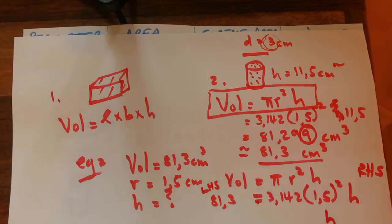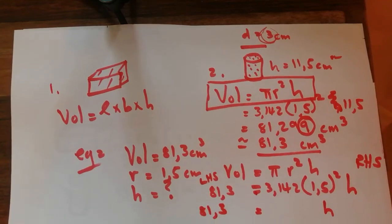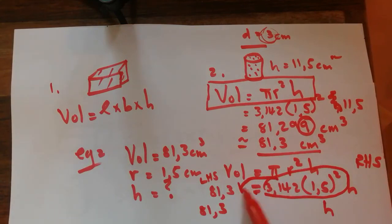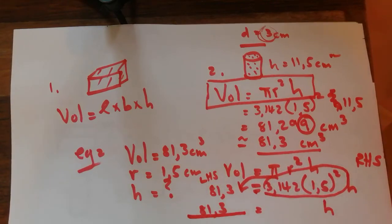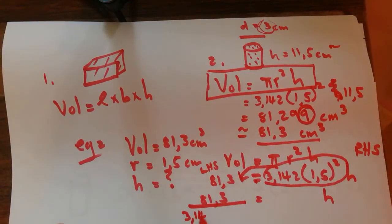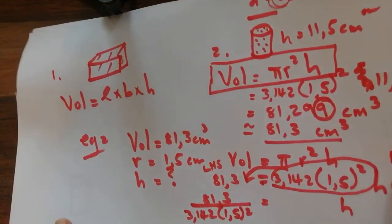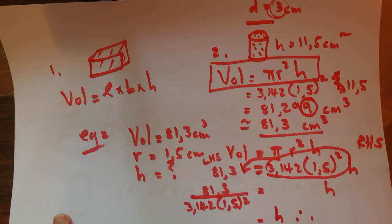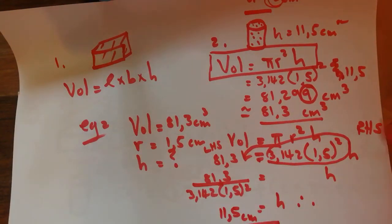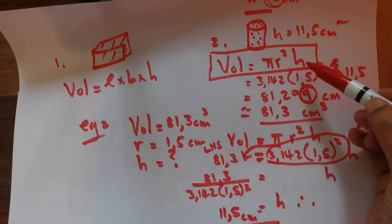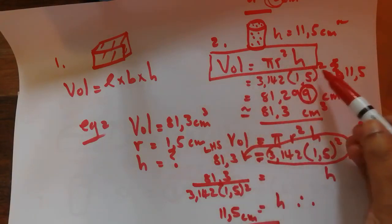So: h = 81.3 ÷ (3.142 × 1.5²). This goes into the calculator and gives h = 11.5 cm. Likewise, in your exam you could be given volume and height and then be expected to make radius the subject of the formula.